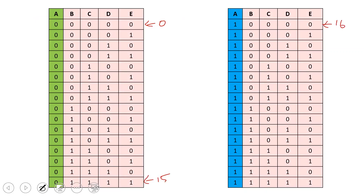The two tables are numbered 0 to 16 and 0 to 31. The difference is that the first table has numbers 0 to 15 where the A variable is 0. The second table has numbers 16 to 31 where the A variable is 1. For variables B, C, D, the two tables are similar — the pattern of 0s and 1s is the same in both K-maps.